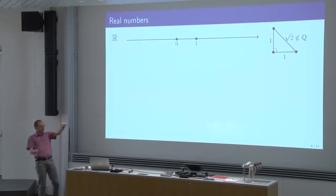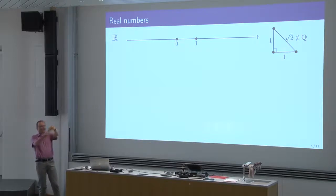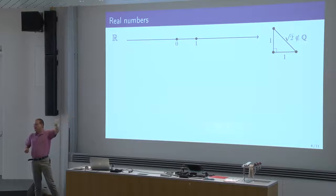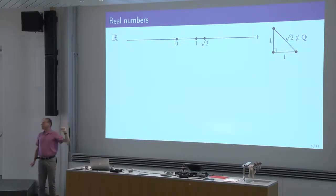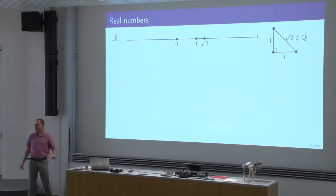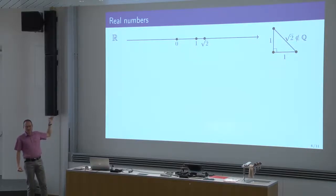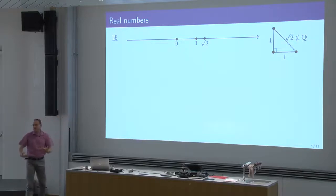This way you produce the number square root of 2. It is the length of this segment, and you can put it on the real line — you take this segment, put one end at zero, and wherever the other end lands, this is square root of 2. That's what square root of 2 is — it's the length of that hypotenuse. So with this geometric mindset you can produce real numbers.